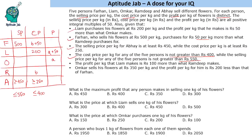The profit per kg that Liam makes is 100 more than what Ramdeep makes. Since Liam's profit is x plus 50, subtracting 100 gives Ramdeep's profit as x minus 50. Also, Omkar sells his flowers at ₹350 per kg, and his profit per kg is 200 less than that of Farhan — so Farhan's profit will be x plus 200.